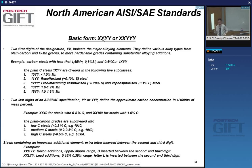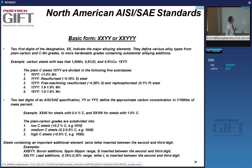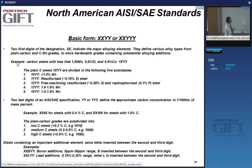The first digits are a reference to the major alloying elements and define the various types of steels. You have basically three types: plain carbon/carbon-manganese steels, tumor-hardenable grades which contain substantial alloying elements. For instance, carbon steels with less than 1.65% manganese, 0.6% silicon, and 0.6% copper will all start with a 1X, so plain carbon steels start with 10.